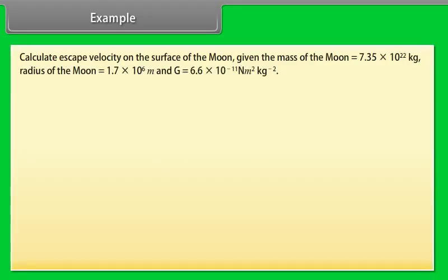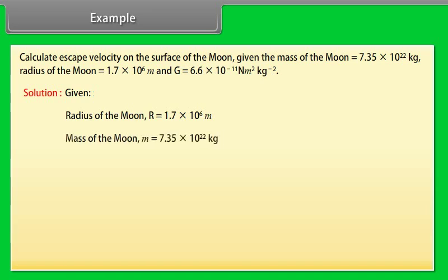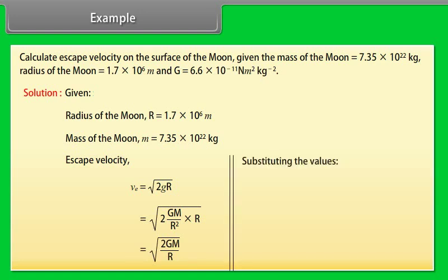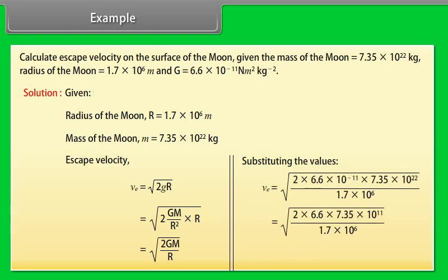Example. Let's take an example of escape velocity. Calculate escape velocity on the surface of the moon. Given the mass of the moon, radius of the moon and value of g. Let's see the solution. Given: Radius of the moon R is equal to 1.7 into 10 to the power 6 meter. Mass of the moon M is equal to 7.35 into 10 to the power 22 kg. Escape velocity is equal to under root 2 g r. By putting the value of g we get escape velocity is equal to under root 2 g m upon r. By substituting the values we get escape velocity is equal to 2.4 into 10 to the power 3 meter per second.